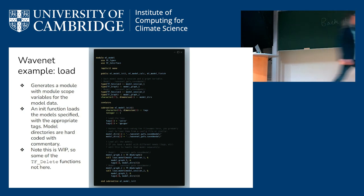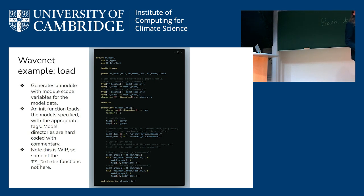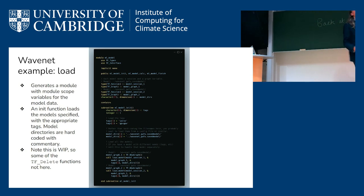We're generating a module and storing the networks in pairs of variables. In this particular example, I'm loading in two models — the example is from WaveNet, which is from the DataWave project that Aditi talked about yesterday. WaveNet has two networks for the different wind directions. The code can process a model where you say you want to load two models into your module.